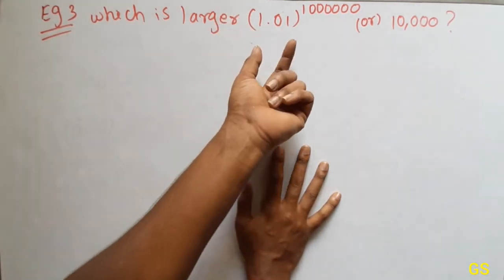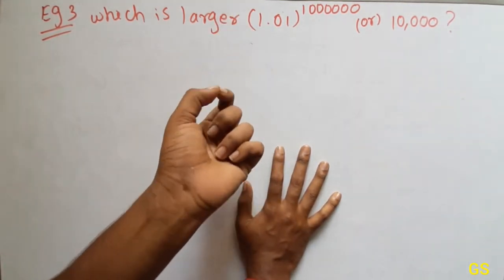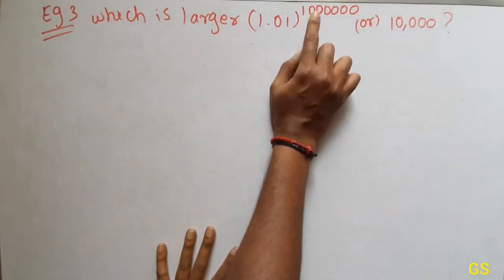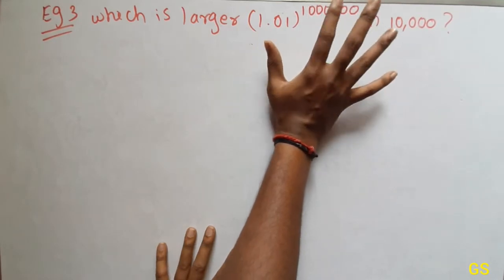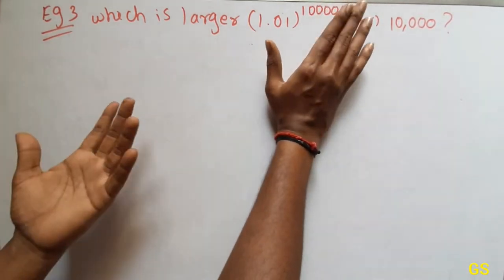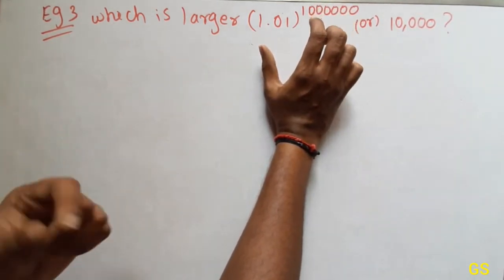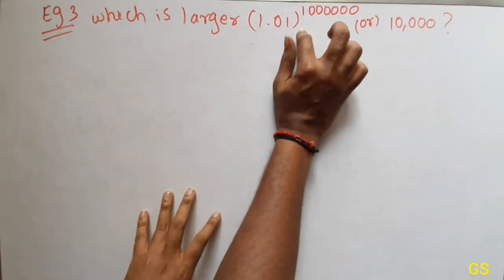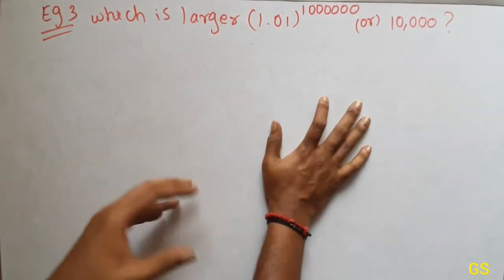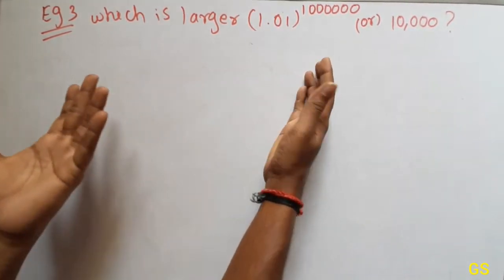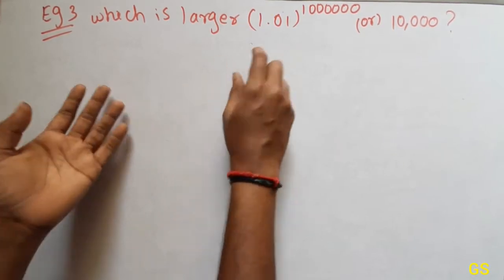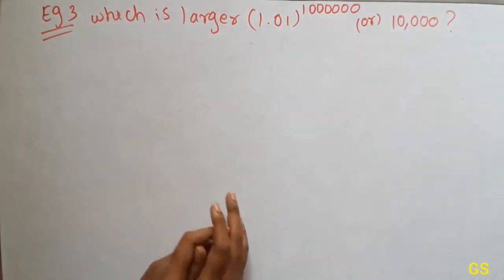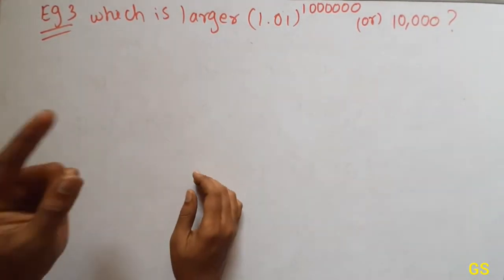Example 3: which is larger? 1.0 — 1 is a positive number in power 1, 2, 3, 4, 5, 6. 6 zeros is a positive number, but in power 1 is a positive number. You can see that 1.0 followed by 1 — then you will see 1.0,000,000,000,000. This is a positive number.